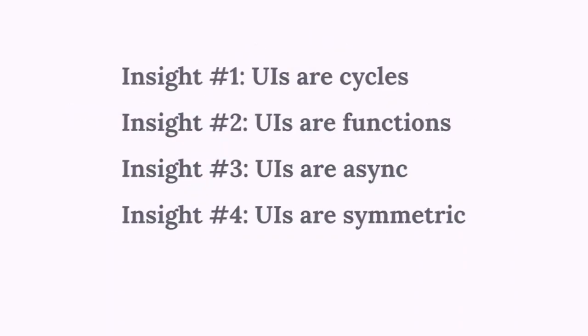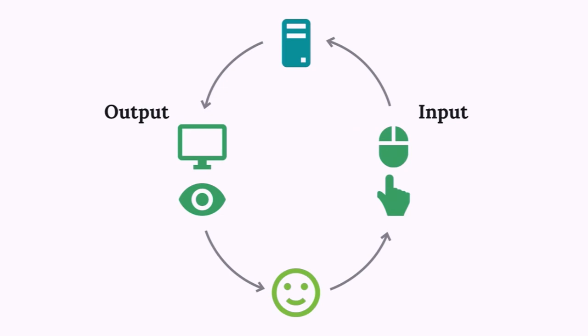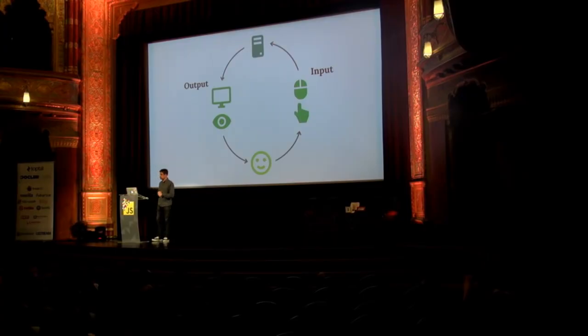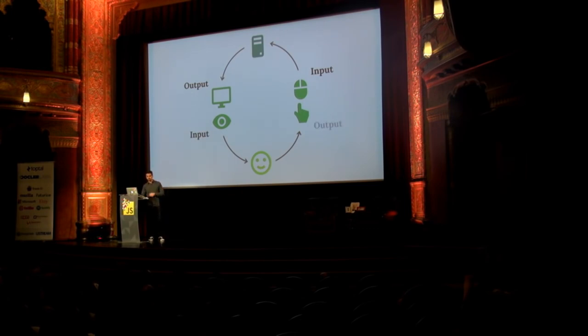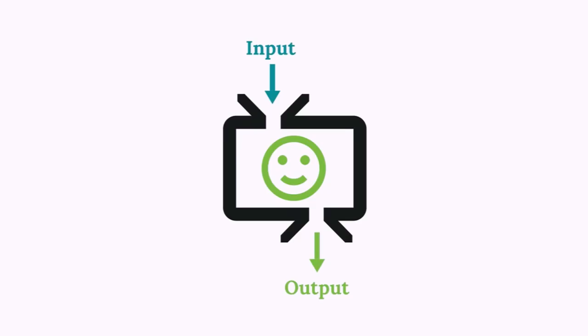UIs are symmetric with the user. If they are symmetric, then just as the computer has an input device and an output device, so do you: input device — your eyes, and output device — your hands. Whenever you have an input and an output, what do you have in between? A function. So your brain is a function.